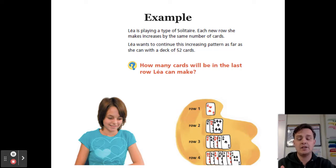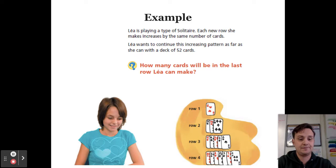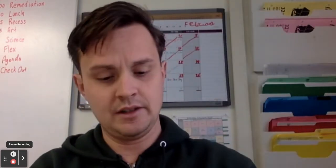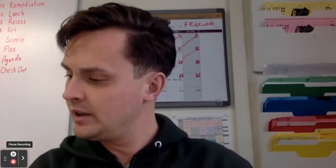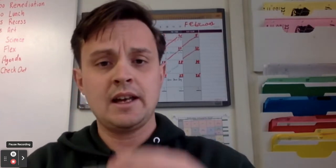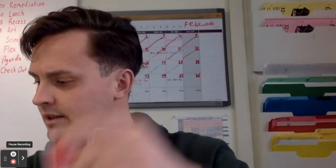For your activity here you have a choice: have a discussion to check for understanding, model this problem using actual cards, or if you'd like a challenge, pause and try to solve the problem yourself. I'm going to model it with actual cards. That first row has one card, the next row has one, two, three, the row after that has one through five.